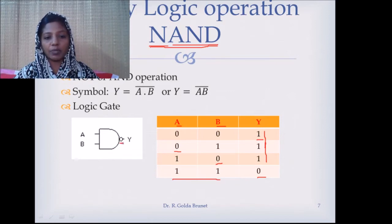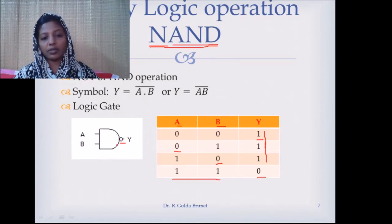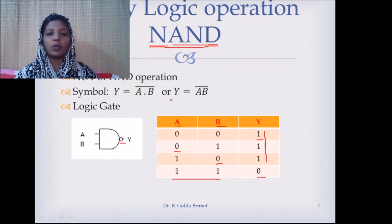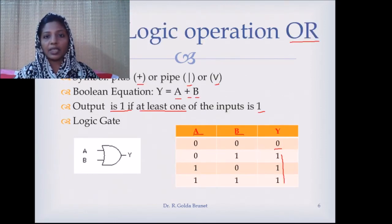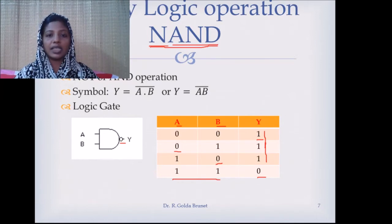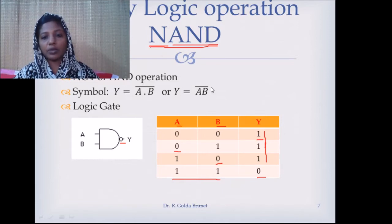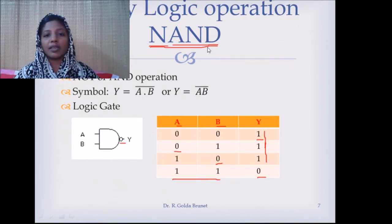Graphically, the AND gate with a bubble is the NAND gate — the output of the AND gate is negated. The NAND gate is not a fundamental operation; it is a derivation of the fundamental AND and NOT operations. It is a derived but very special operation, and we will see why later in this session.